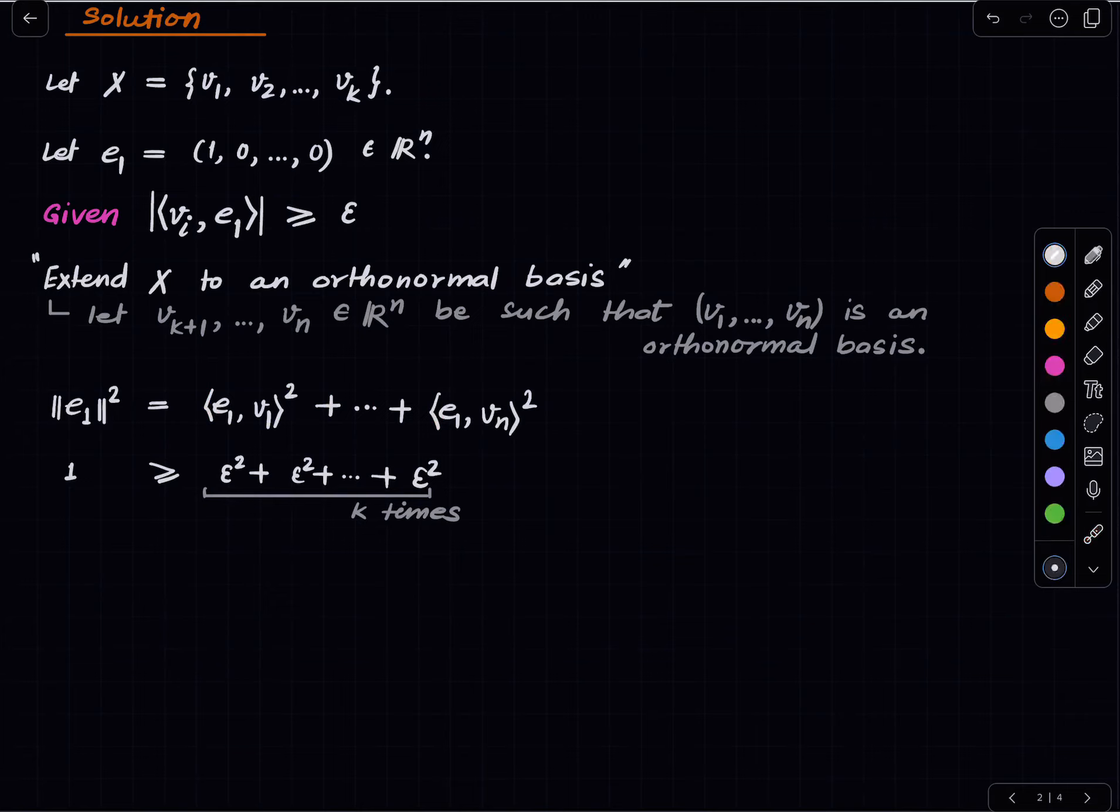We have that which is equal to k epsilon square and now we get 1 by epsilon square is at least k and that's it.